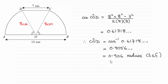And you can see the answer is 0.906 radians to three significant figures. And to do this, what you need to do is use the cosine rule. We've got this triangle here. We're told the radius of each of these sectors is eight centimeters.